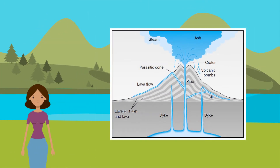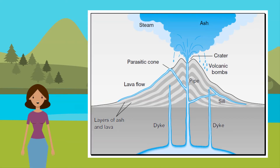The buildup of material from a series of eruptions forms a volcanic cone. The shape of the cone depends on the type of material and the chemical composition of the lava. Viscous lava forms a steep-sided cone, while thin non-viscous lava produces a low-angle shield volcano. Many cones are composite, consisting of layers of ash and lava. Other volcanic hazards include nuées ardentes, which are superheated clouds of gas and dust, and lahars, which are mud flows, as well as ash, pumice, and toxic gas.